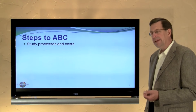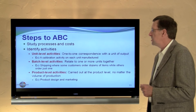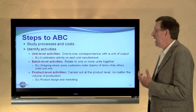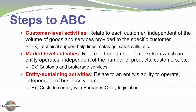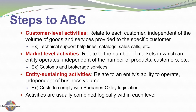The steps to setting up an ABC system first begin with a study of a business's processes and costs. We identify the activities we have. Activities can be subdivided into categories such as unit-level activities, where there's a one-to-one correspondence with a unit of output; batch-level activities, which relate to one or more units together; product-level activities, which are carried out at the product level no matter the level of production; customer-level activities, which relate to each customer independent of the volume of goods and services provided; market-level activities, which relate to the number of markets in which an entity operates independent of the number of products or customers; and entity-sustaining activities, which relate to an entity's ability to operate independent of business volume. Activities are usually combined logically within each level — this is a good general framework.